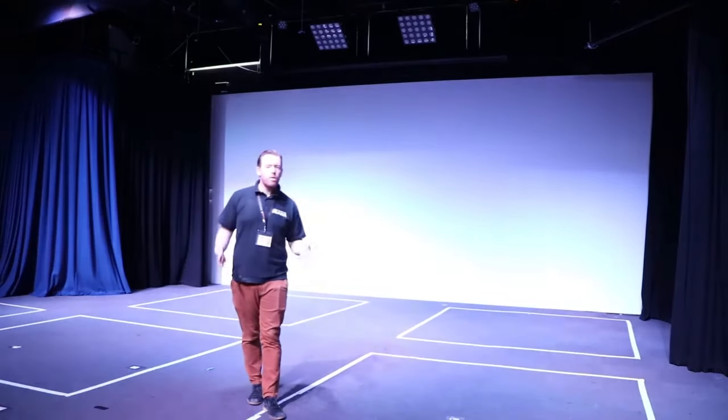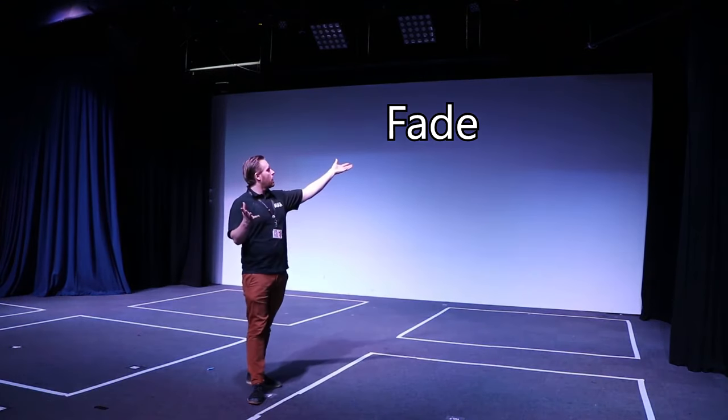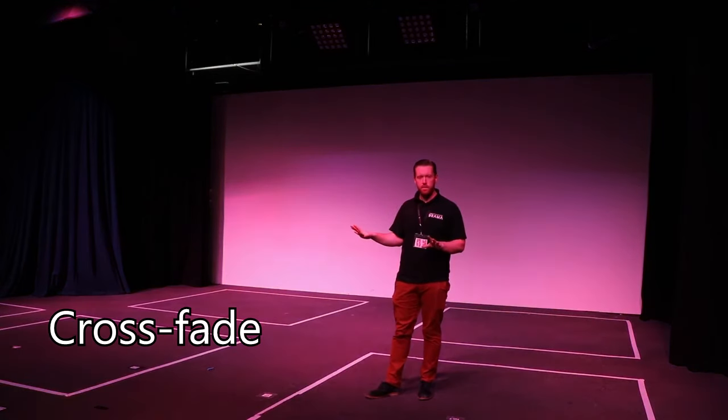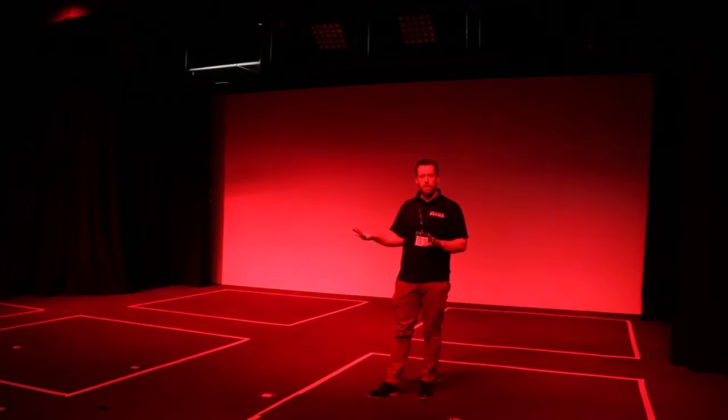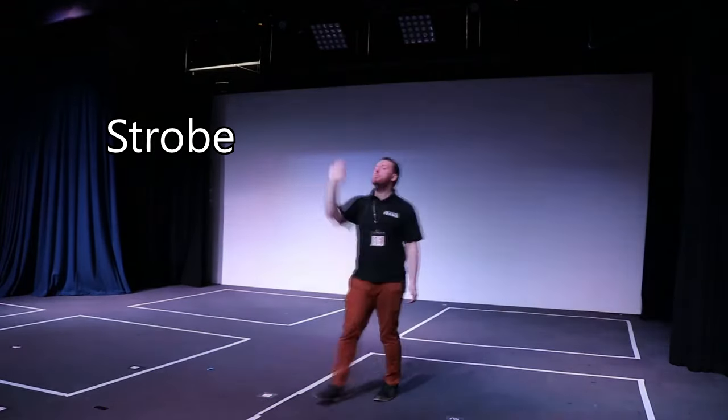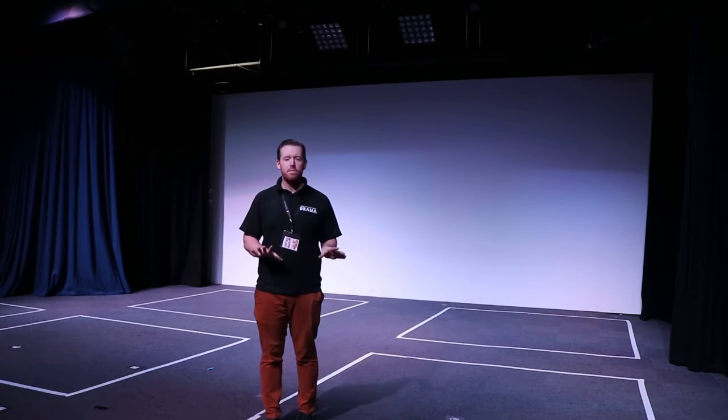Let's try something a little bit more complex — can you spot the lights that are being used? When a light fades in or out gradually, we call this a fade. But when one light changes into another one gradually, we call this a cross fade. Flashing lights like these we call a strobe. We can't use them for too long, just in case we've got somebody in the audience who has epilepsy.